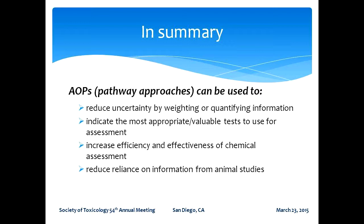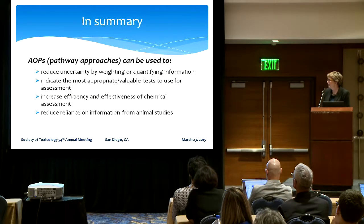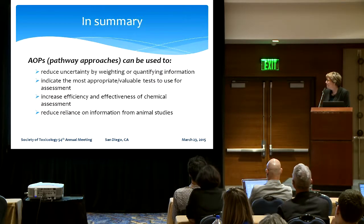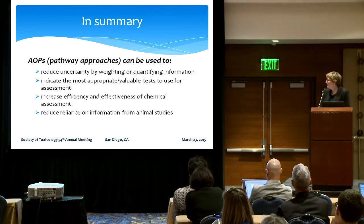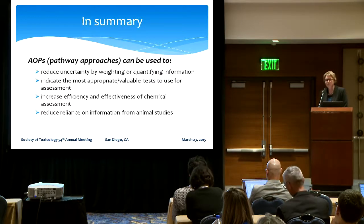To summarize, AOPs or pathway-based approaches can be used to reduce uncertainty in a number of ways, including by weighting or quantifying information. They can also be used to indicate the most appropriate or valuable tests to use in an assessment — in an IATA, for example. Overall, they'll increase the efficiency and effectiveness of chemical assessment and, currently and increasingly in the future, reduce the reliance on information from animal studies.